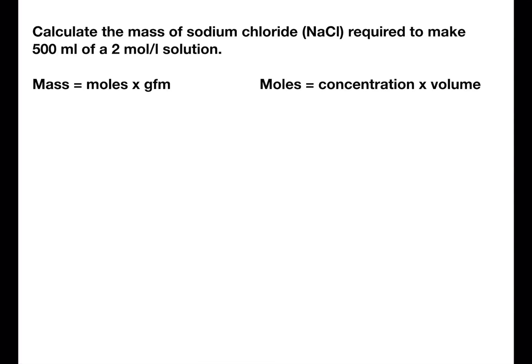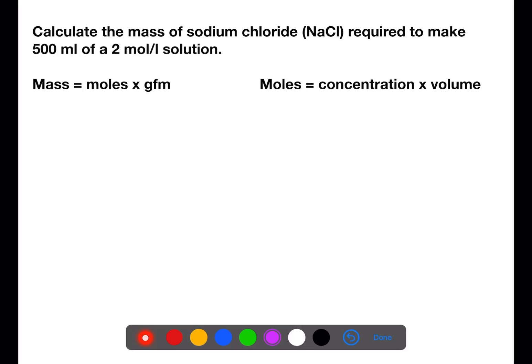In this first calculation we are to calculate the mass of sodium chloride required to make 500 mls of a 2 molar solution. This is the sort of thing you would have to carry out in the lab if you knew what solution you wanted to make but needed to know how much of your solute to weigh out. We're trying to calculate the mass, so I'm going to circle that part of the equation. We don't yet know the moles, but from the formula given in the question we would be able to calculate the gram formula mass.